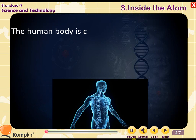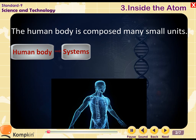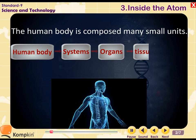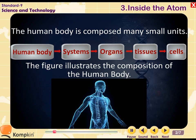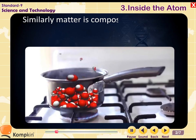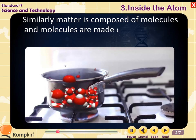The human body is composed of many small units called human body systems. These systems are composed of many organs, the organs are made up of tissues, and the tissues are made up of cells. The figure illustrates the composition of the human body. Similarly, matter is composed of molecules and molecules are made of atoms.